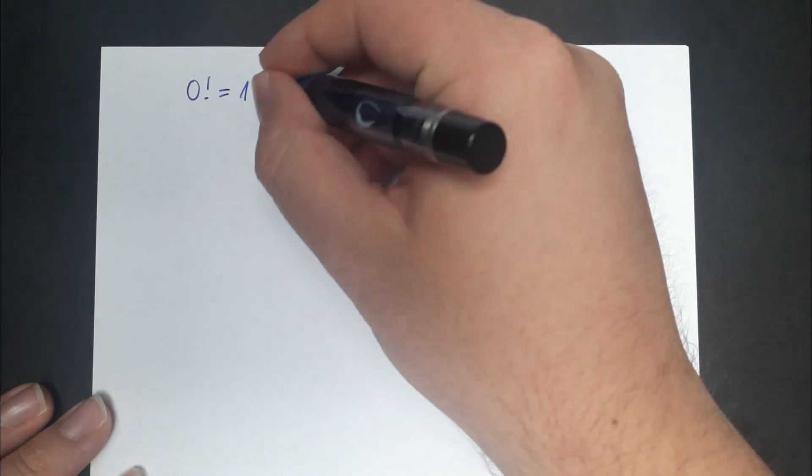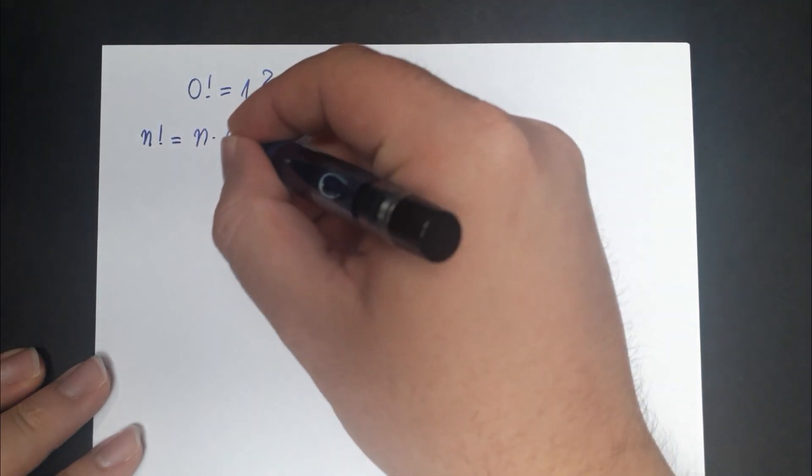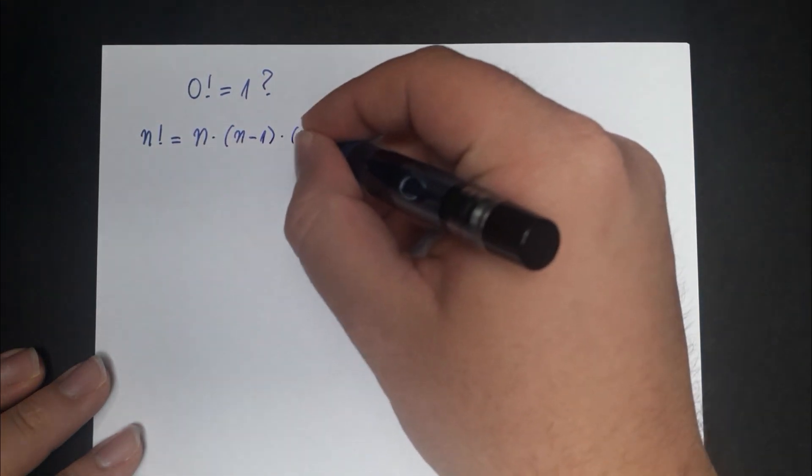Why is 0 factorial equal to 1? 0 factorial is equal to 1 seems to defy the idea of you multiplying down until you get down to 1 and then you stop.